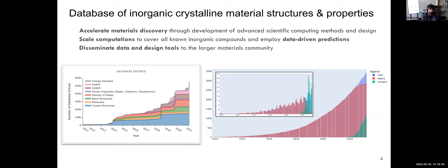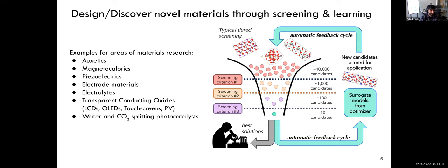People discover novel materials mostly through screening and learning. On the right is the famous funnel: you start at the top with materials from the Materials Project entering the funnel, apply screening criteria one, two, three to reduce options by orders of magnitude down to about 10 candidates, try to synthesize or analyze those, find common denominators, and either call that a success or close the loop — feeding learnings back into machine learning models to inform new calculations.